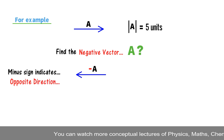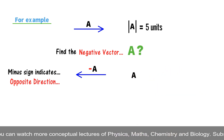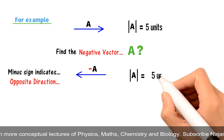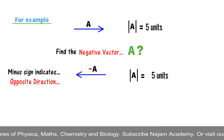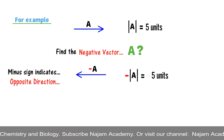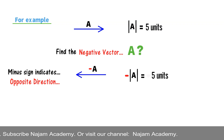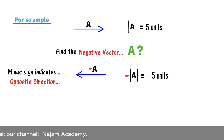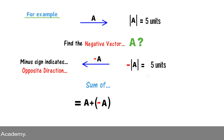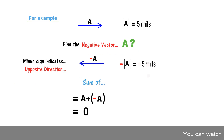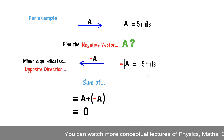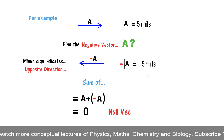The magnitude of vector a remains the same, and the minus sign tells me it is in the opposite direction. Remember, the sum of a plus minus a is equal to zero, because a and minus a cancel out, and I get the null vector.